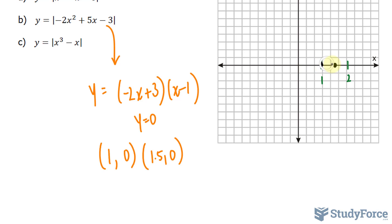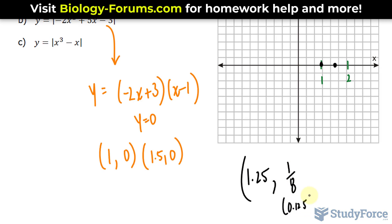Next, I need to find the vertex, so I take the average of the x-coordinates. 1 plus 1.5 divided by 2 is 1.25. That's the x-coordinate of the vertex, and substituting this back into your equation, whether it be this one or this one, will give you 1 over 8, which is equivalent to 0.125.